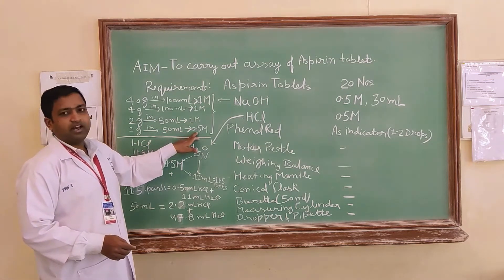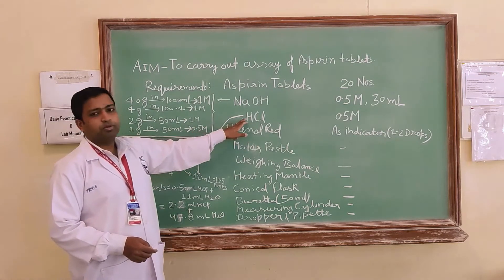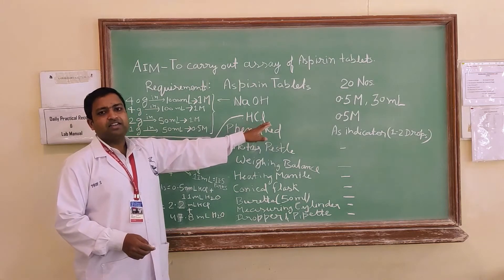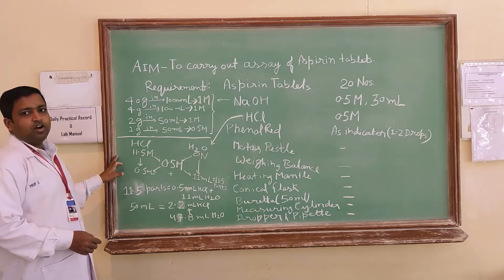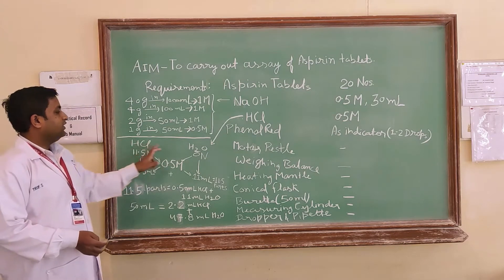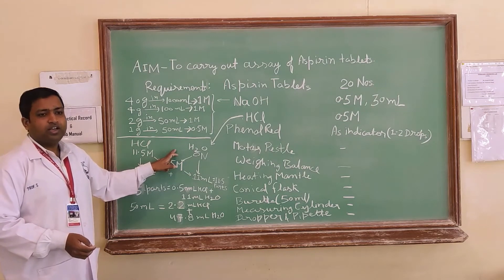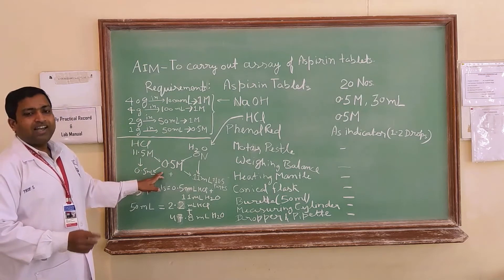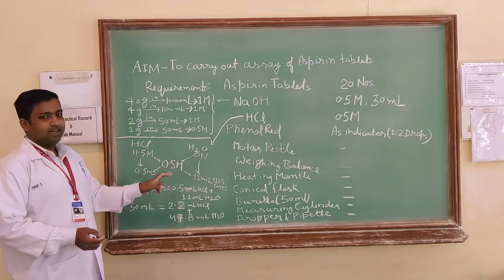Next question is how will you prepare 0.5 molar HCl. The molarity or normality of HCl is 11.5 and with the help of addition of water you will dilute it up to 0.5 molar. You will use alligation method to prepare 0.5 molar HCl.